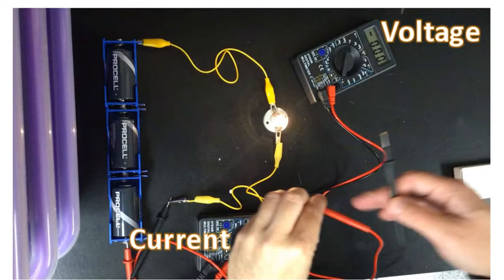So let's watch the experiment so we can complete the table and determine the resistance for the light bulb.